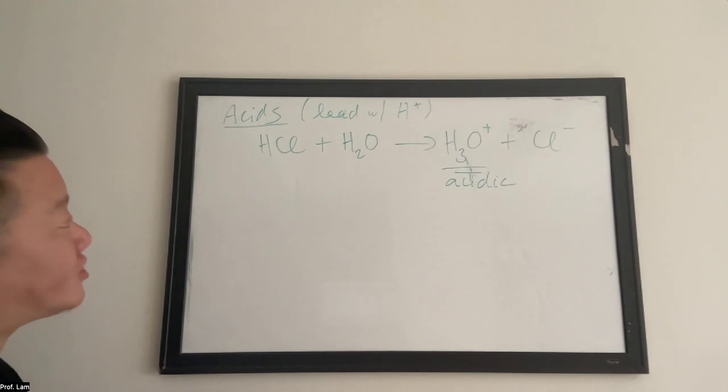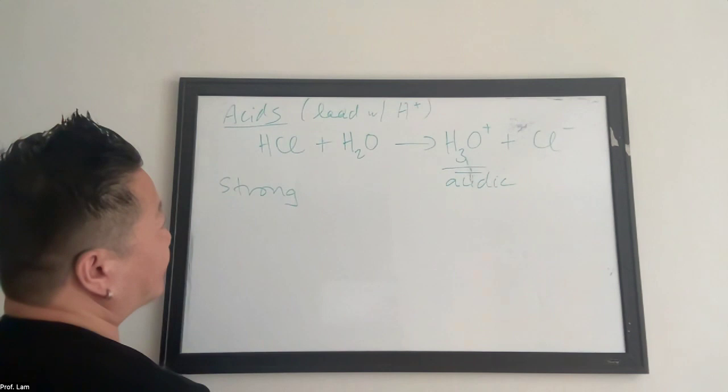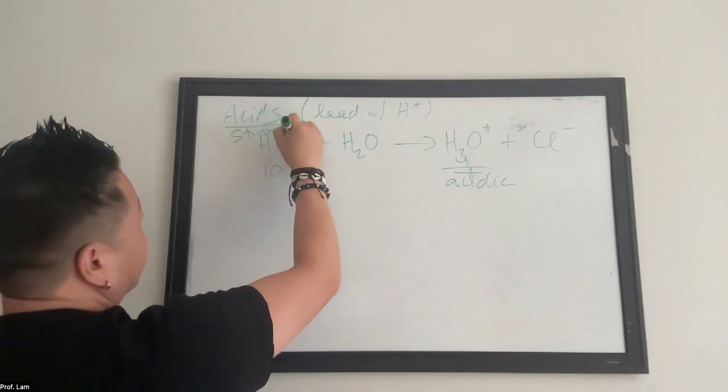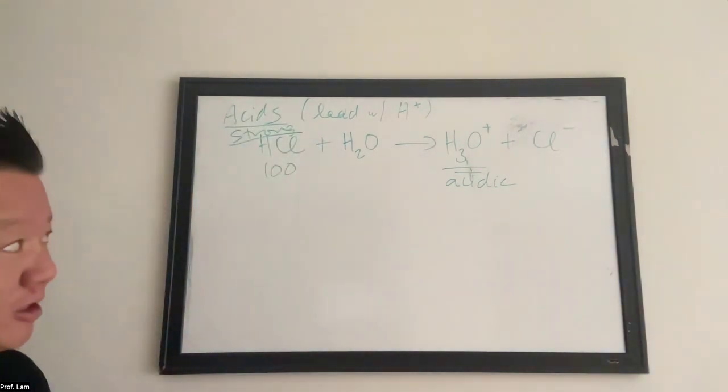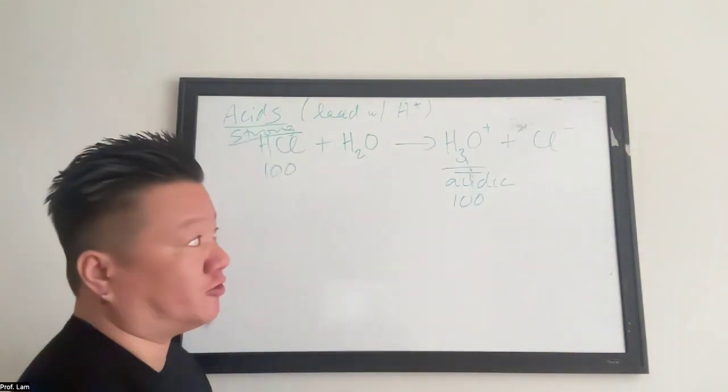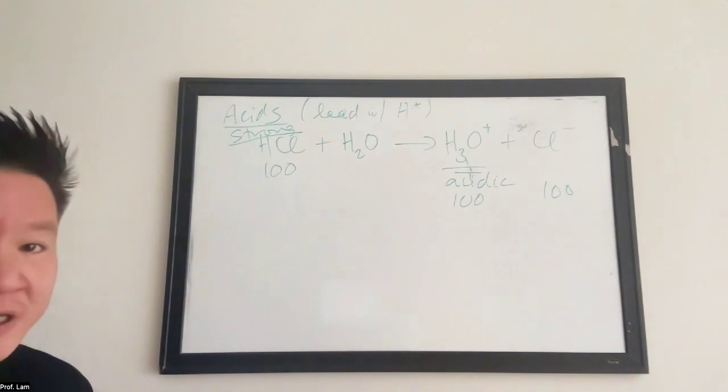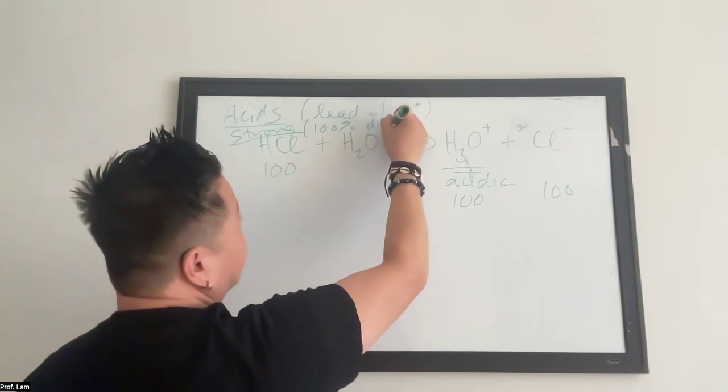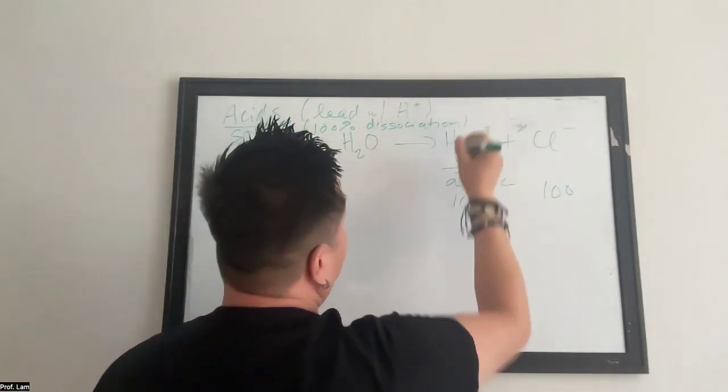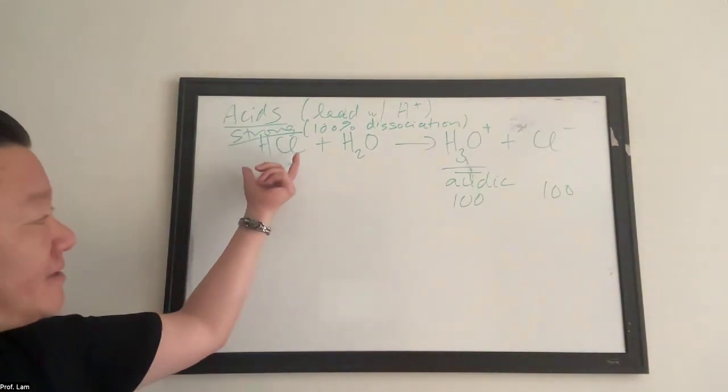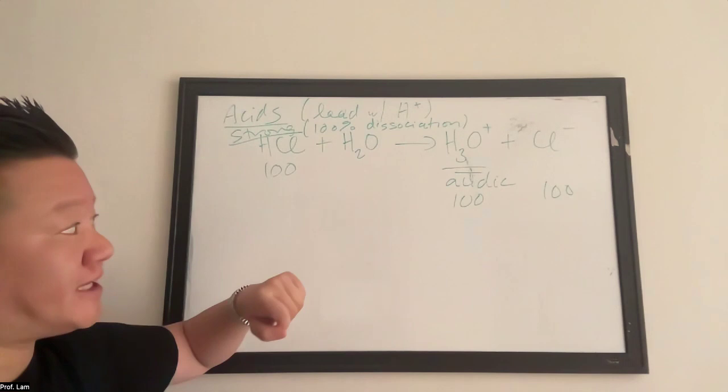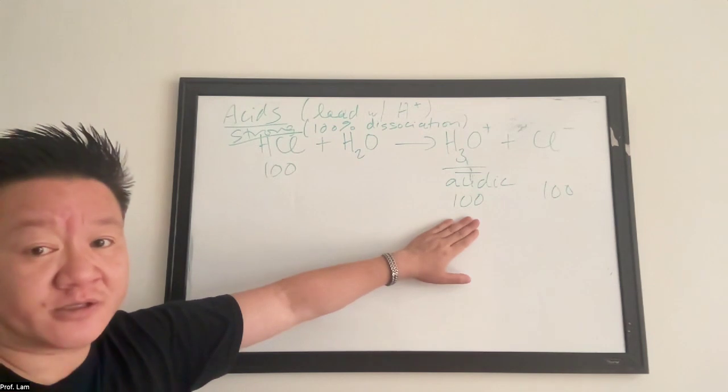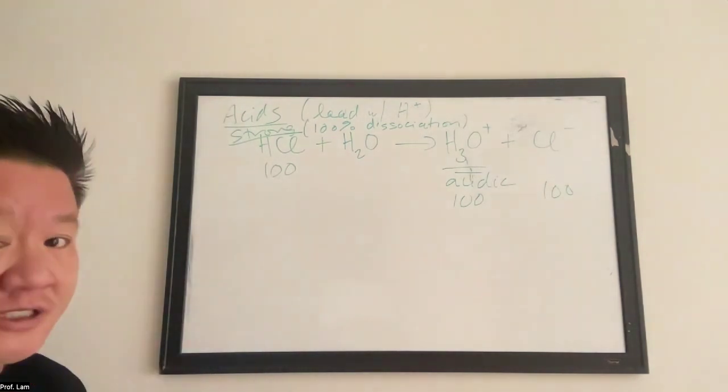This hydronium ion is what gives you an acidic solution. That's why it's considered acidic. So in a strong situation, a hundred percent, say you have a strong acid. If you have 100 HCl molecules, you produce 100 hydronium molecules and 100 chlorides, meaning you have 100% dissociation. Dissociation means they split up into their ions, H plus and Cl minus. So HCl will give 100% of its protons. And so that's why HCl is considered a strong acid.